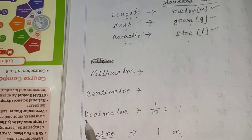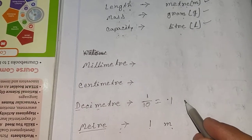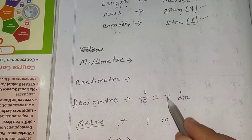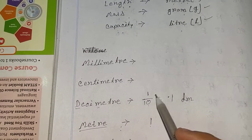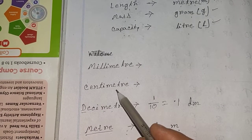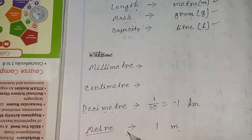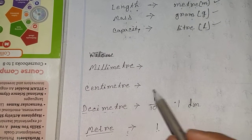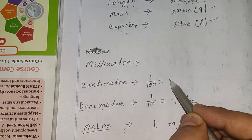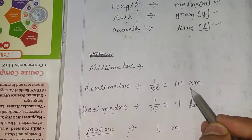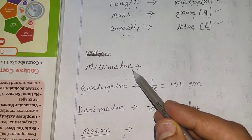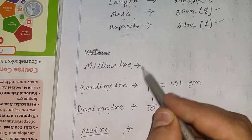So 0.1 dm — dm is the short form for decimeter. Now that is centimeter. Centimeter is smaller than decimeter, so we divide one by hundred. One divided by hundred becomes 0.01 cm — that is centimeter.